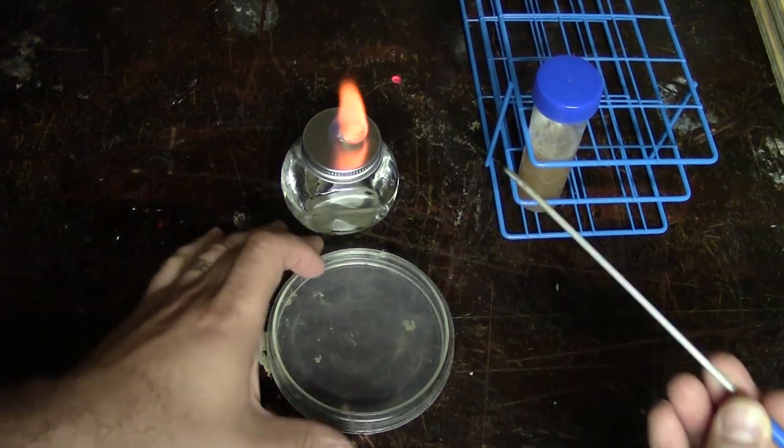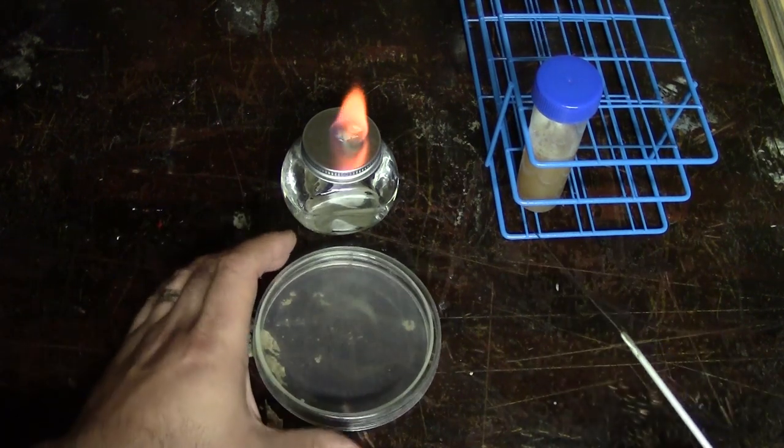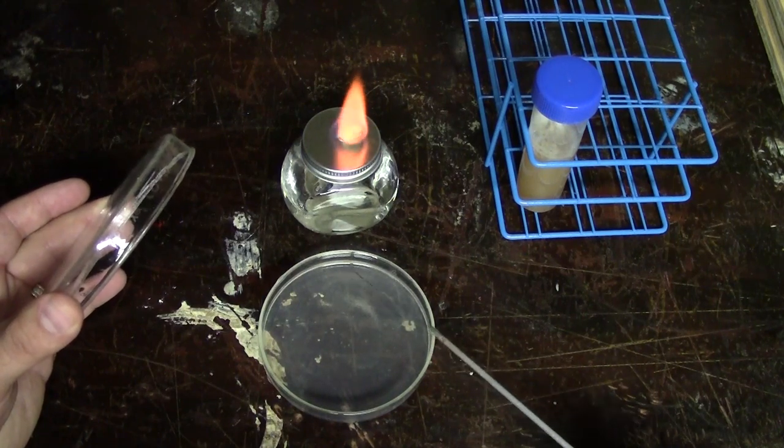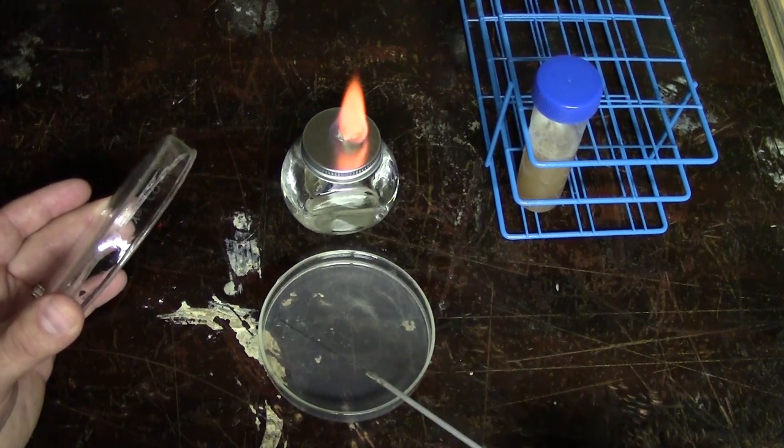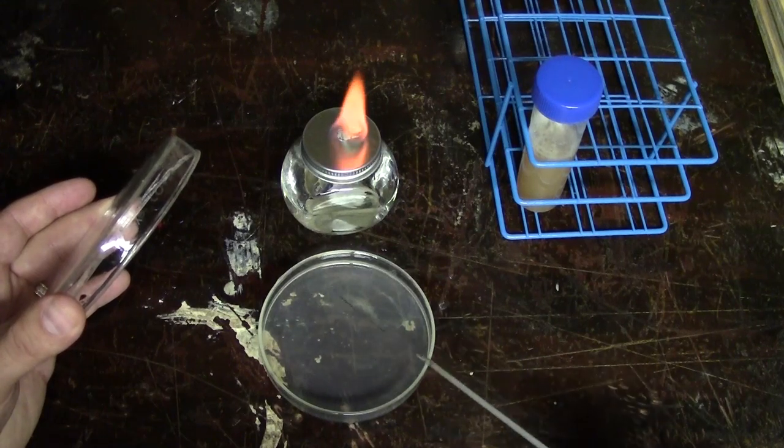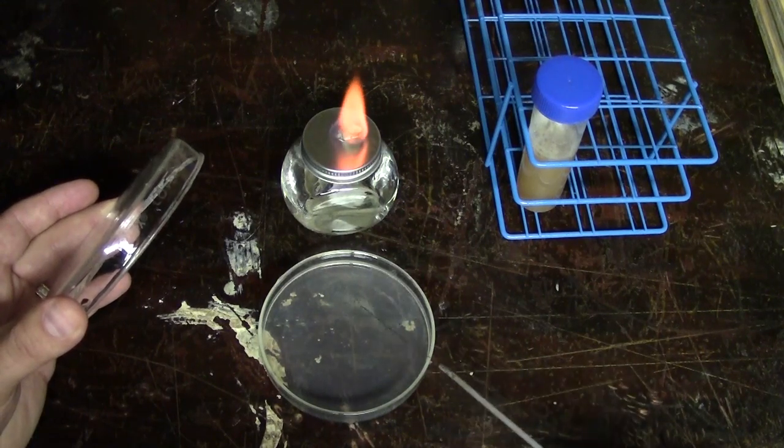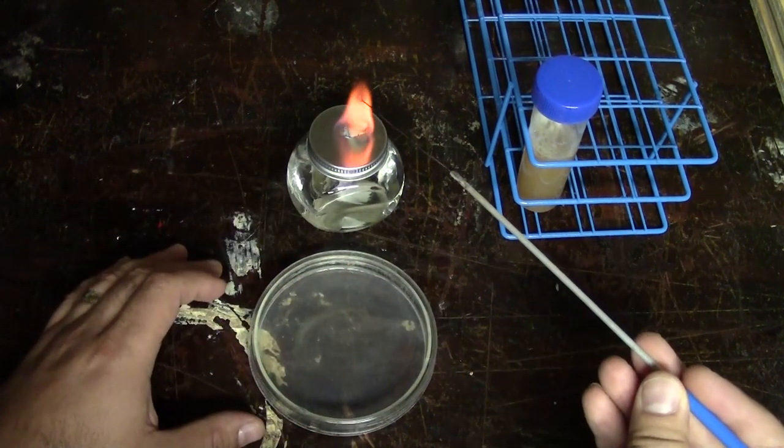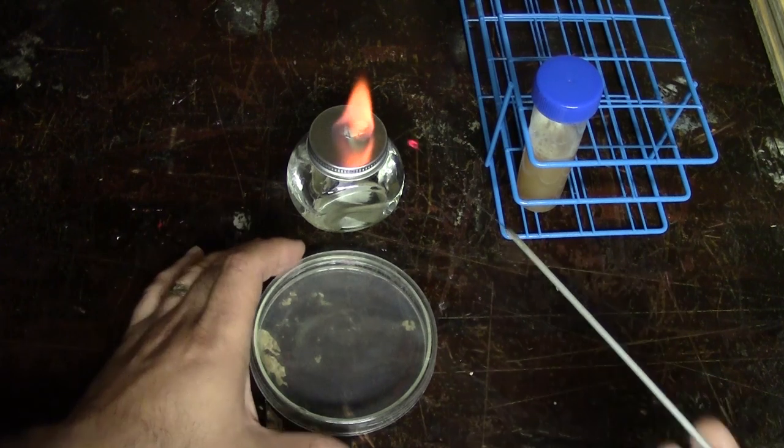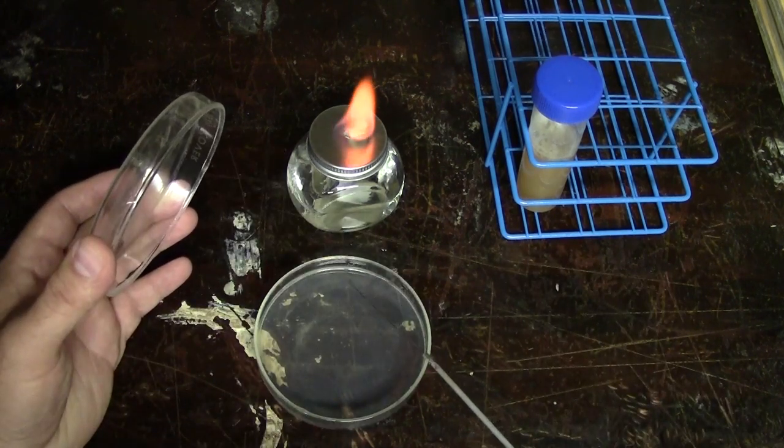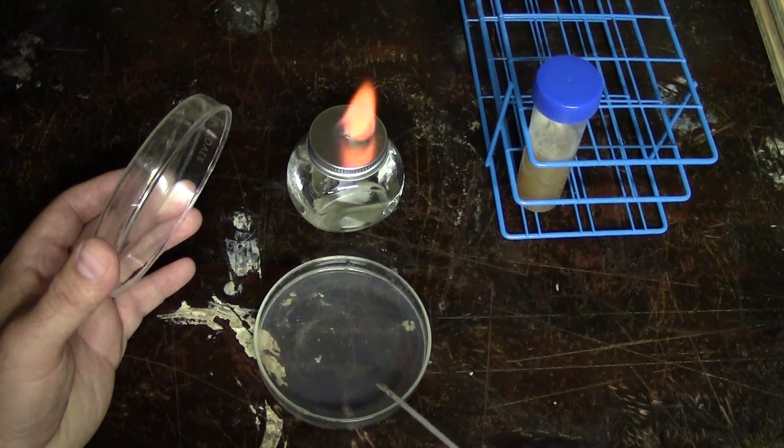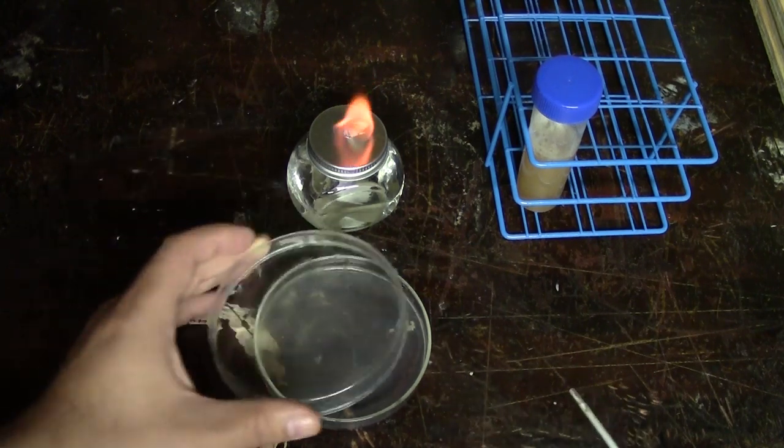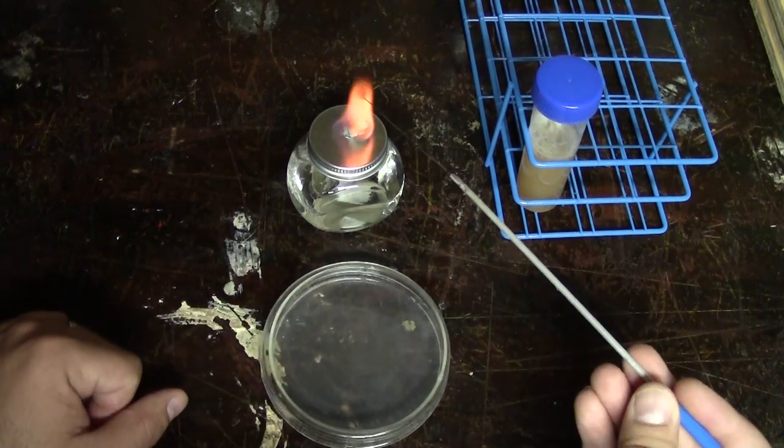We now flame our loop, rotate our dish 90 degrees and now we're going to cool in one corner our loop so you touch the gel that'll cool the loop and now you're going to streak across your first set of streaks once and then again smear out the yeast. We'll turn that again 90 degrees, reheat the loop to sterilize the loop, touch the gel and again cross our last streak, streak it out and we're going to do it a fourth time.